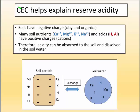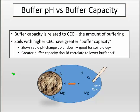CEC stands for cation exchange capacity. The cations — calcium, magnesium, potassium, sodium — are positively charged, and so are hydrogen and aluminum. The exchange refers to their ability to come on and off the soil, and the capacity is how much that soil can hold. Not all soils have the same ability to hold nutrients. Soils with a higher CEC have a greater buffer capacity, which slows rapid pH change up or down. That's great for soil biology — your crops and microbes won't go into shock if pH jumps suddenly.